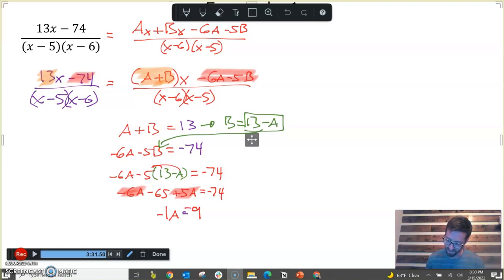I'm going to combine my like terms, which gives me negative 1A, and then I'm going to add 65 to both sides, which gives me, I believe, 9. Actually, negative 9. So if negative 1A equals negative 9, we can divide by negative 1 on each side and get that A equals 9. Now, if A equals 9, we know that A plus B equals 13. So if A equals 9, that means that B must equal 4.